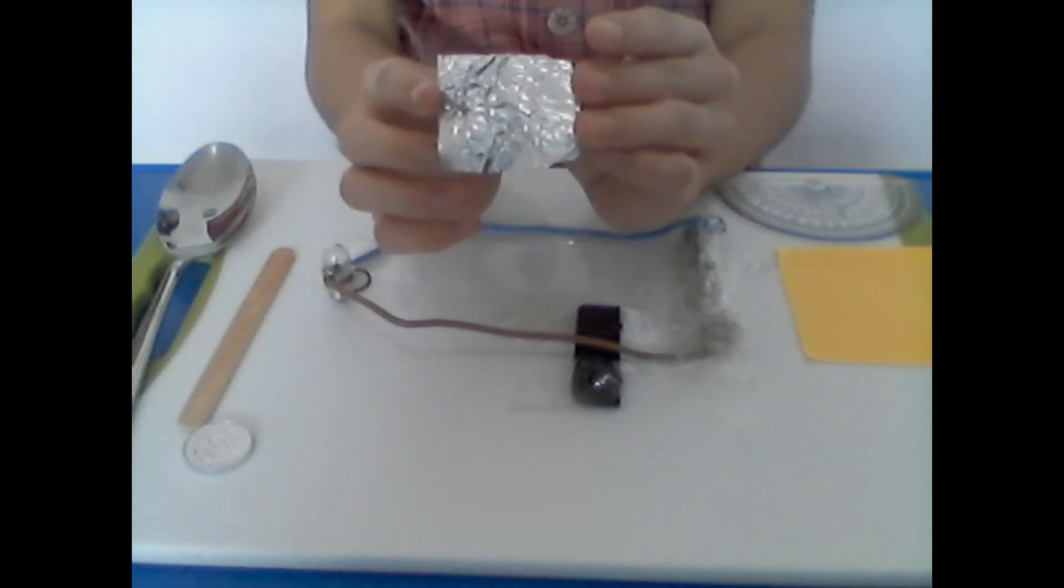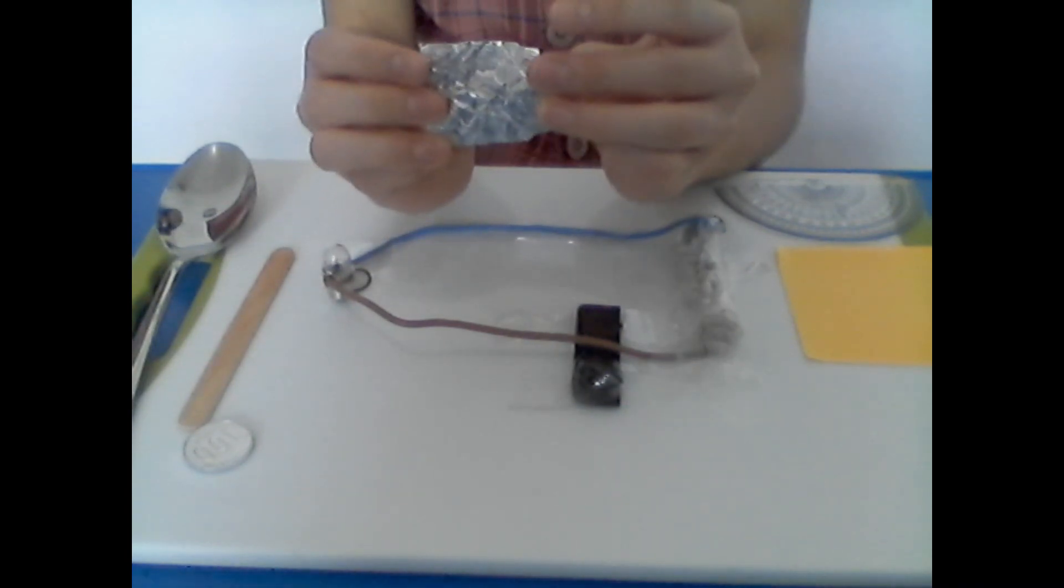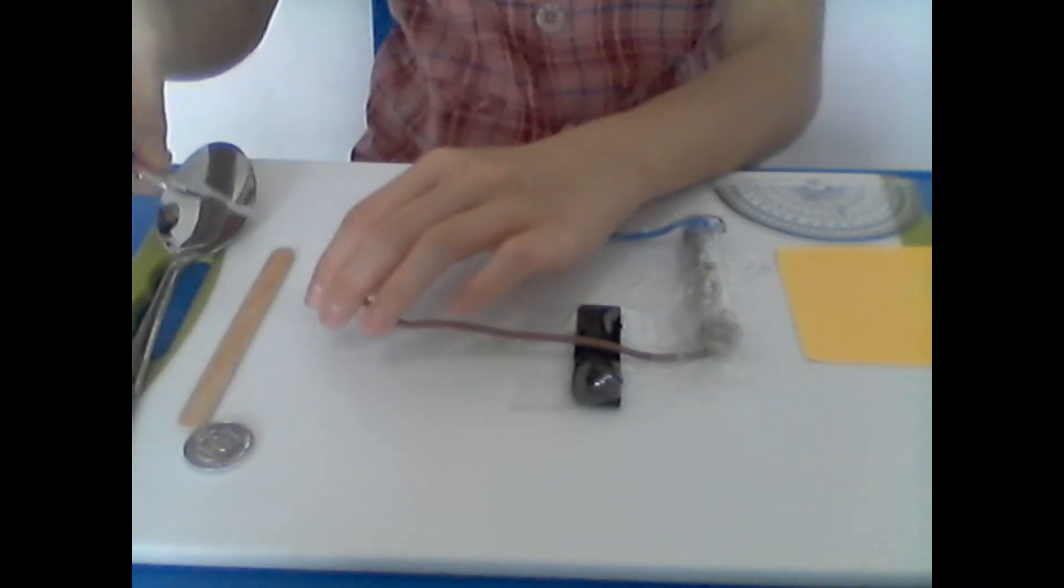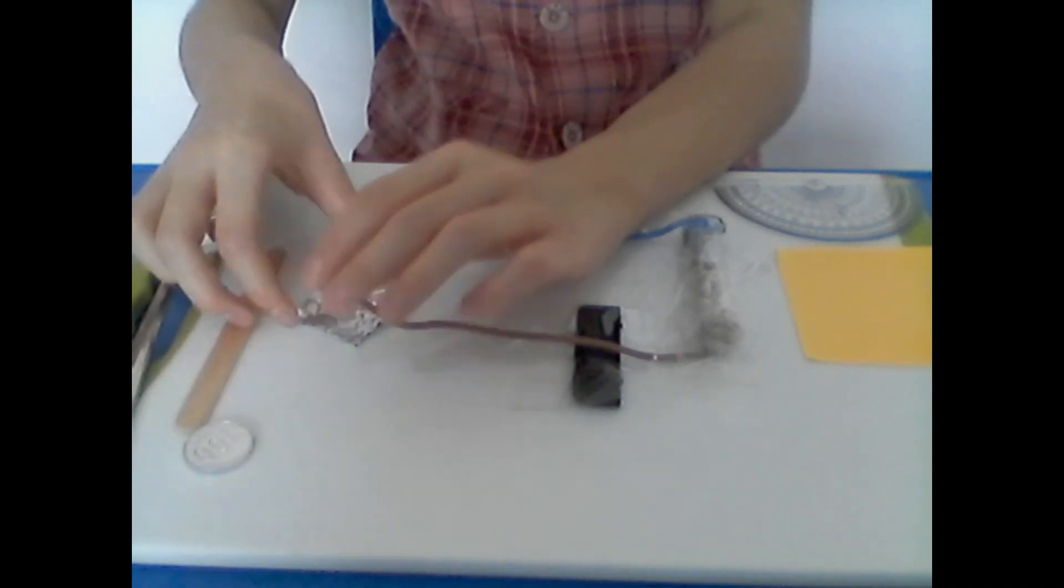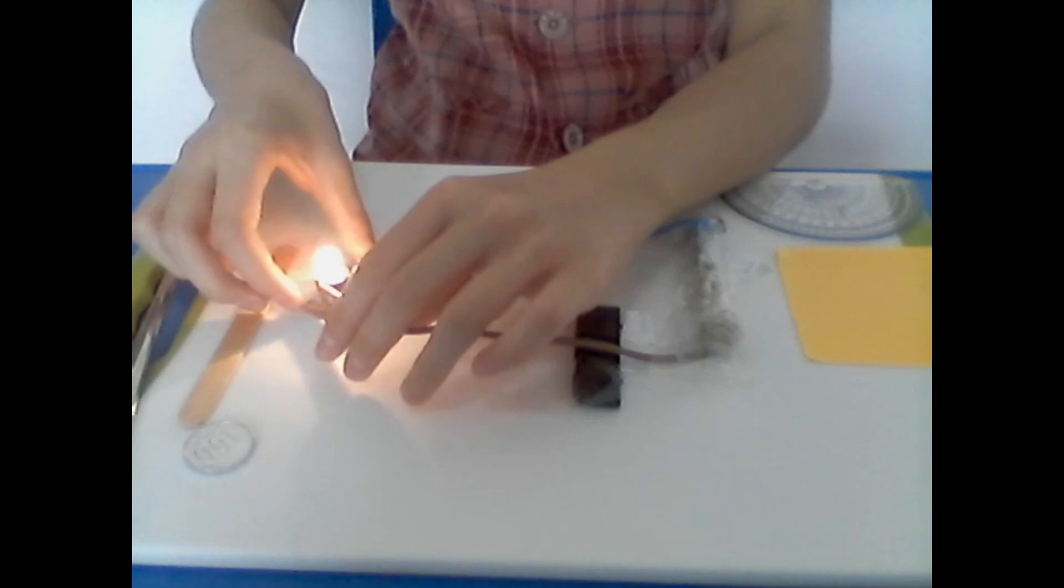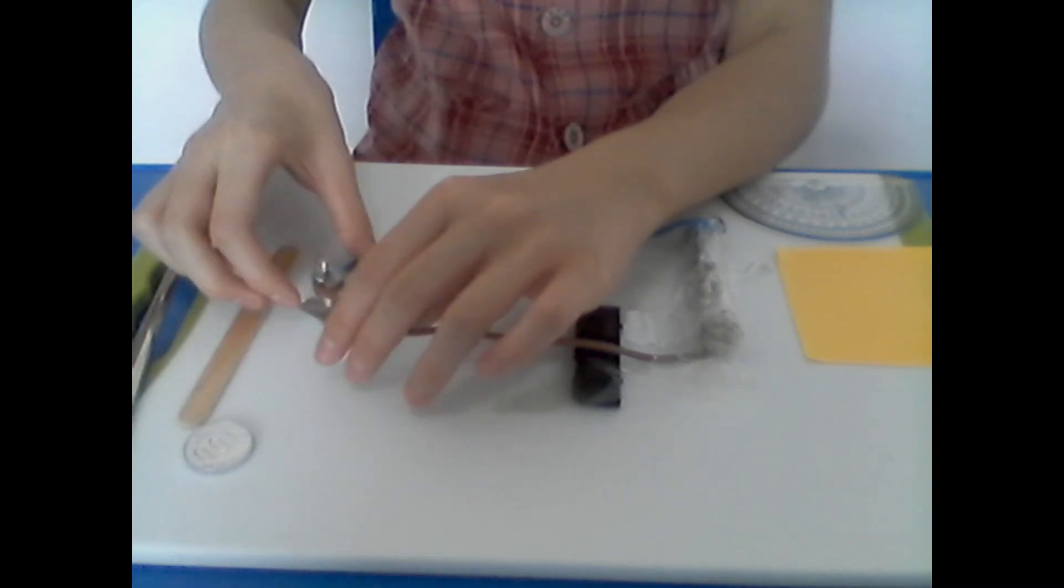Now, let's try the aluminum foil. The light bulb lights up. That means the aluminum foil is an electric conductor.